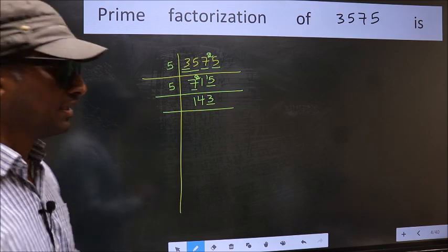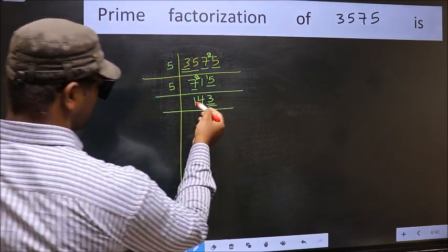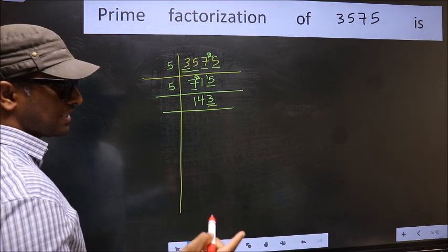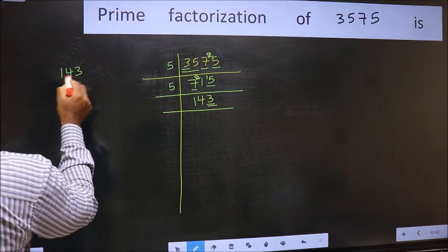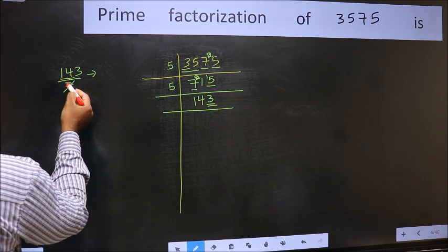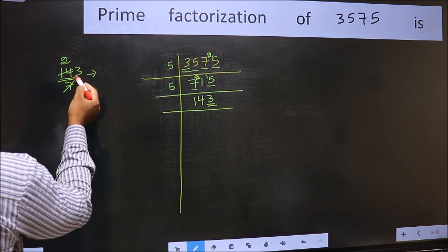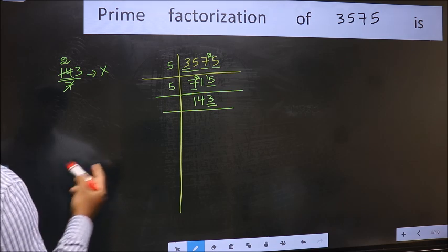Next, prime number 5. The last digit is neither 0 nor 5, so this is not divisible by 5. Next, prime number 7. Let us check divisibility by 7 here. When do we get 14 in the 7 table? 7 times 2 is 14. Now 3. We don't get 3 in the 7 table, so this is not divisible by 7.